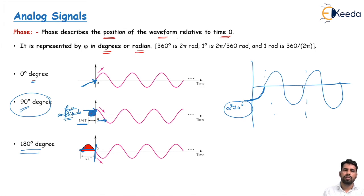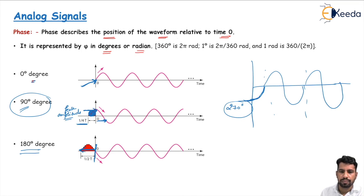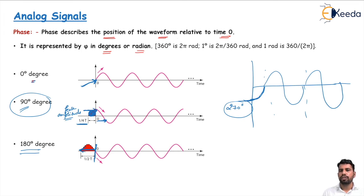At the origin point, the wave starts with a certain amplitude value, and that position is measured in degrees — that is phase. These are the three main characteristics of analog signals or sine waves: first, amplitude — the different values at different instances of time, measured in volts; second, period and frequency — inversely related, measured in seconds and Hertz respectively; and third, phase — the position of the wave relative to time zero.